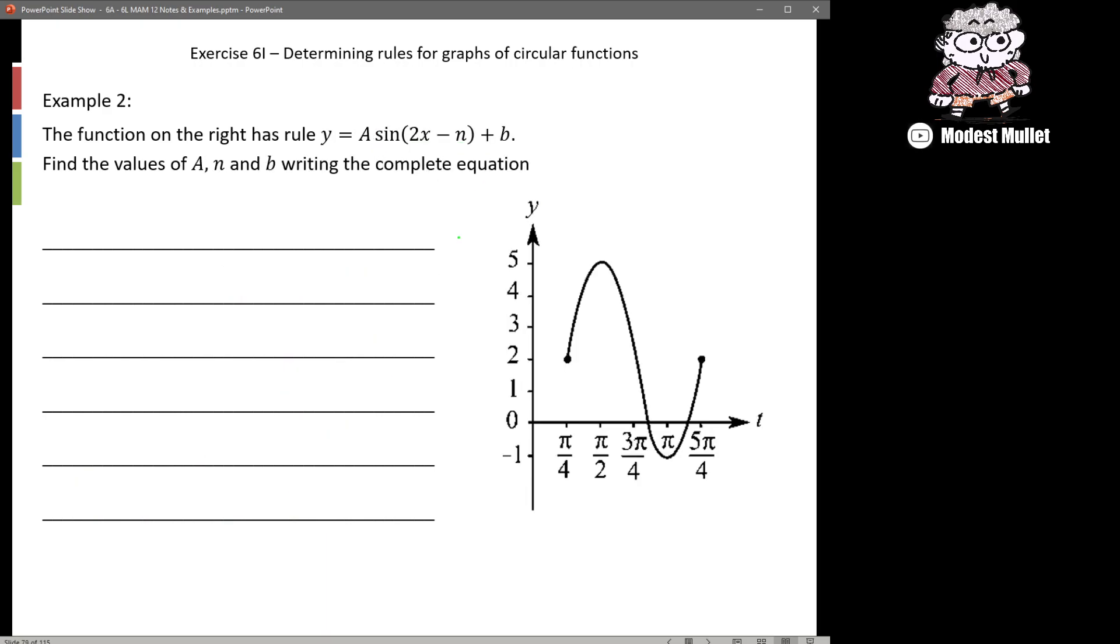Another worked example, this one a little bit harder. We've got a rule of y = a sin(2x - n) + b. So straight away we can see we have an amplitude. We're actually given the 2. We're trying to find n which in our case is actually our h, and then we're also trying to find this b over here.